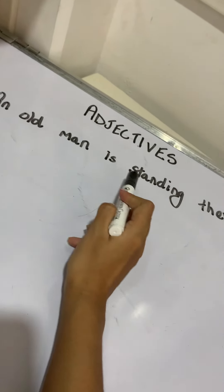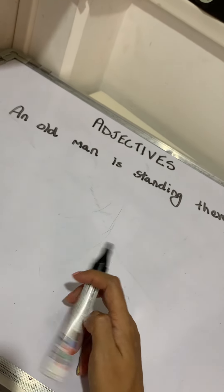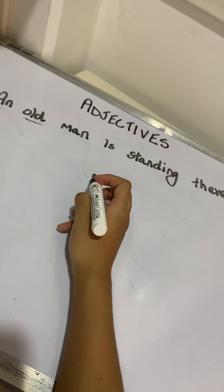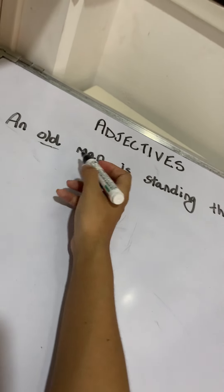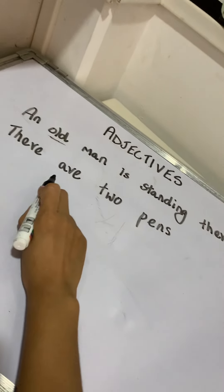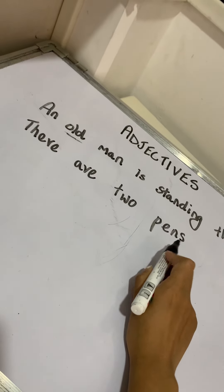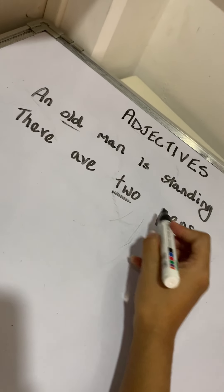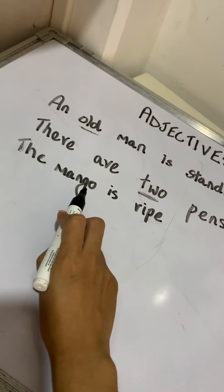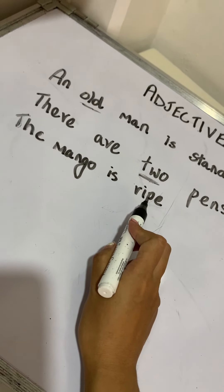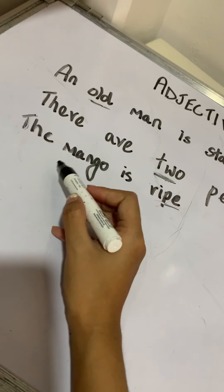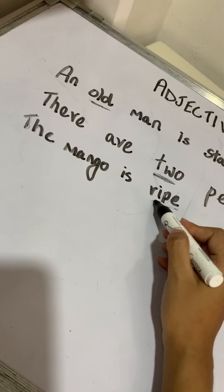Let's take a look at more examples. An old man is standing there — the word old says what kind of man is standing, so old is the adjective. There are two pens — the word two says how many pens, so two is the adjective. The mango is ripe — the adjective ripe says more about the noun mango, so ripe is the adjective.